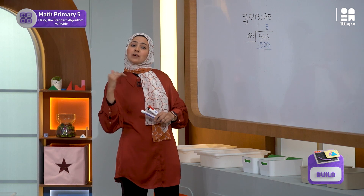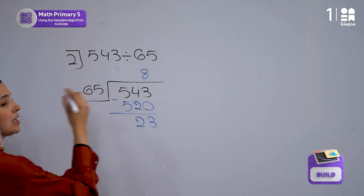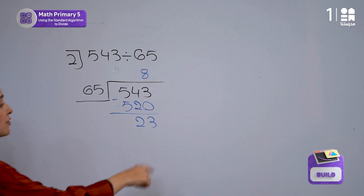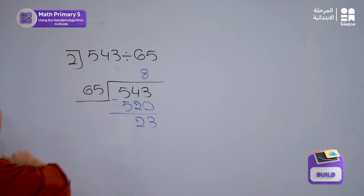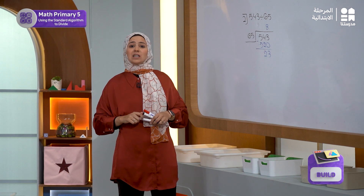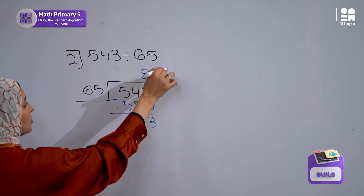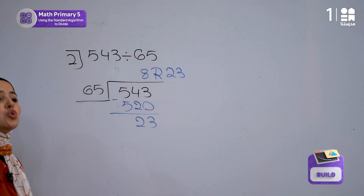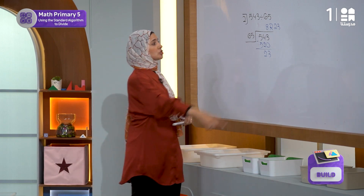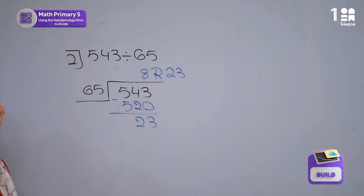Now I'm going to subtract. When I subtract 520 from 543, the answer is 23. You can notice that 23 is smaller than the divisor 65, so we will not divide anymore. The remainder is 23. My quotient is 8 and the remainder is 23.